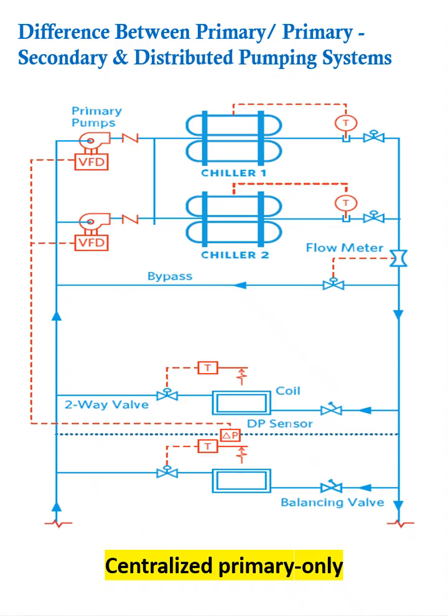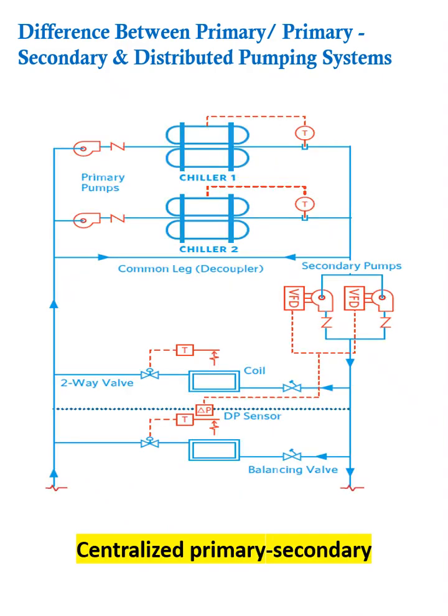Now, in the primary secondary variable system, you can see chillers are available, and the VFD is not connected to the pumps in the primary application. The VFD is connected to one more set of pumps called the secondary pump, and now the secondary pump becomes variable, pumping water to the load and the AHUs.